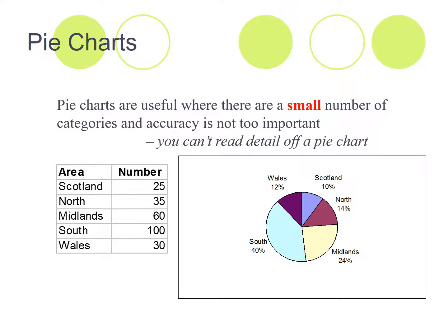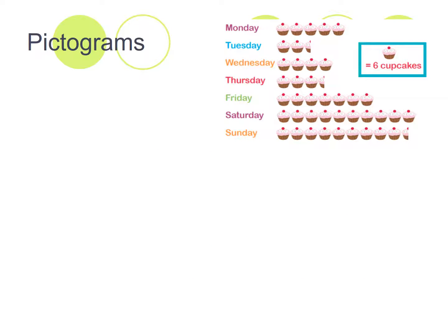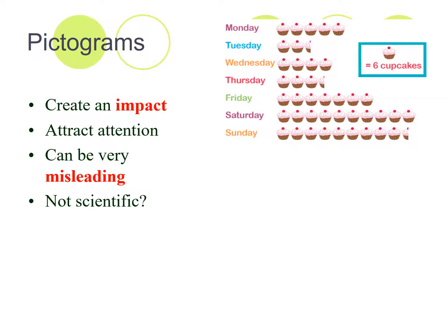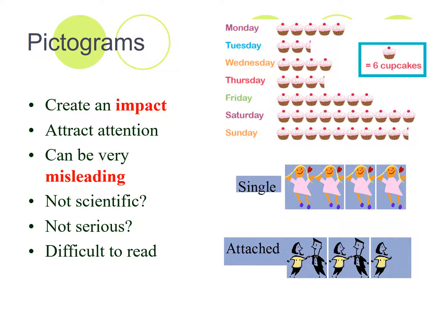So pictograms, pictograms, they create an impact. They're usually just for effect. It's harder to read the information that's in them. They do attract attention, but they can be very misleading. It's hard to read it. They're often used to sort of catch somebody's eye, but they're not scientific and often not serious. Again, not recommended for scientific purposes. And again, here's an example. Exactly, what does that mean? What does that blank space there mean? It's really hard to read.